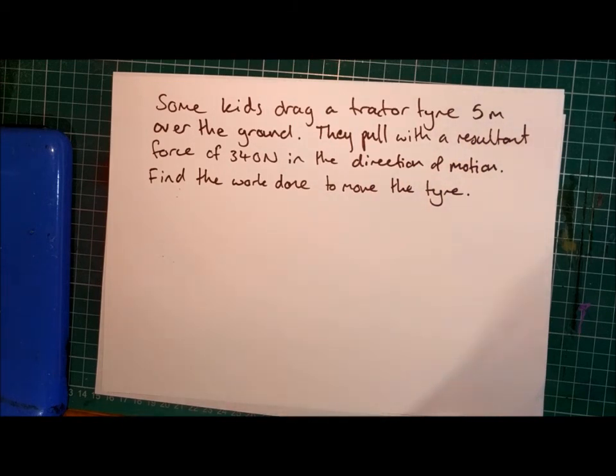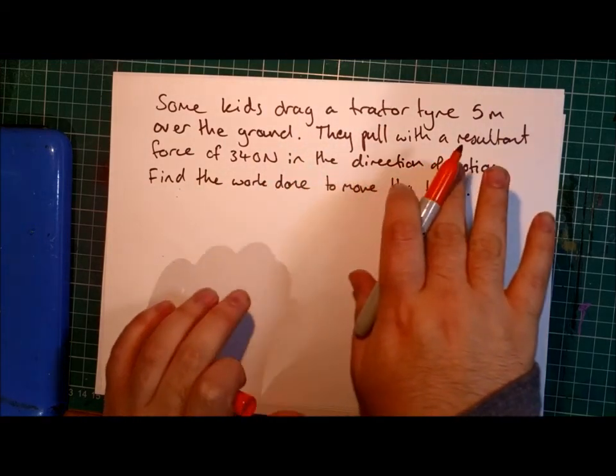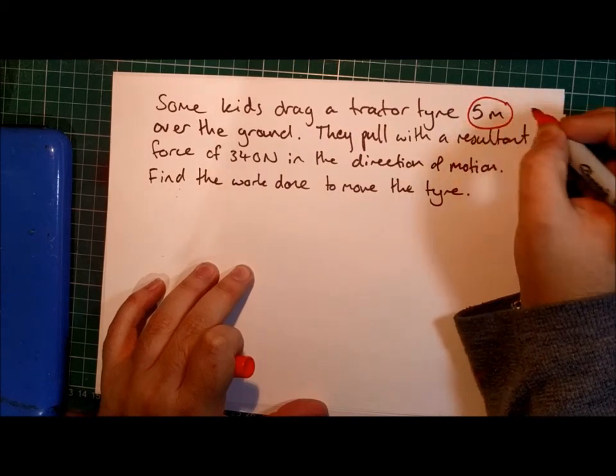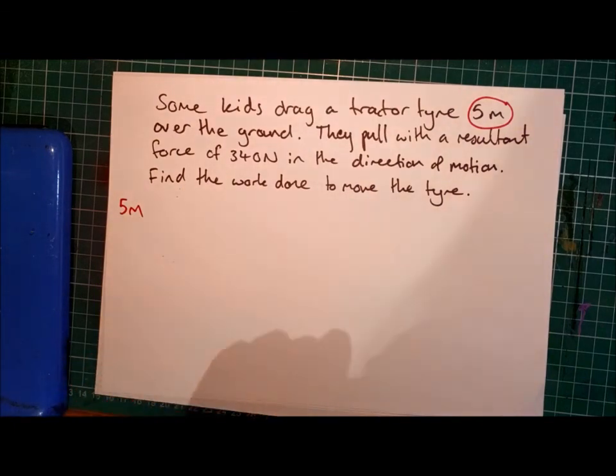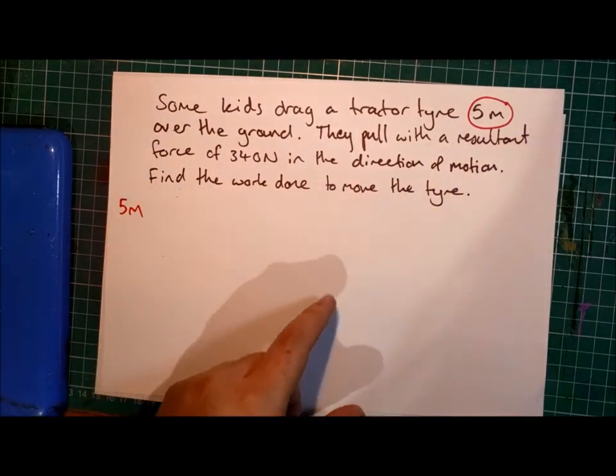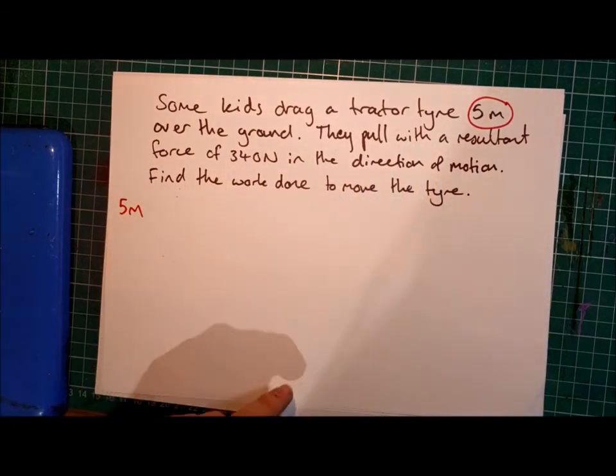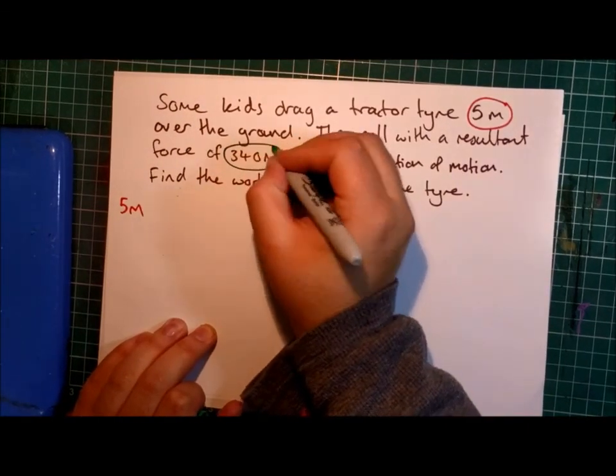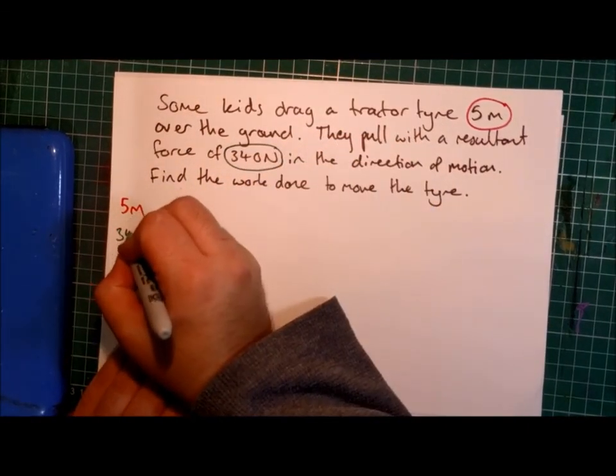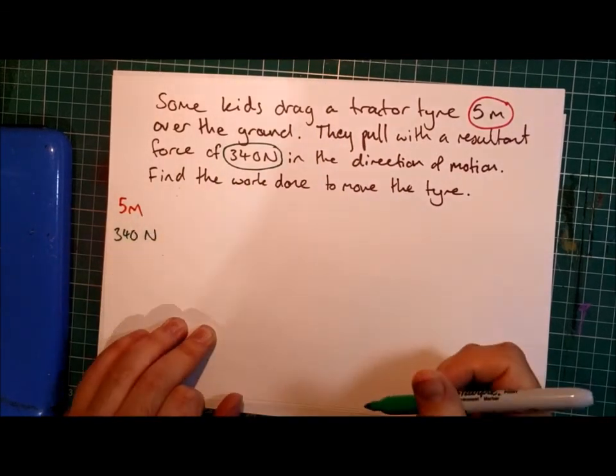So let's highlight the physical quantities mentioned in the question. We have five metres - some kids drag a tractor tyre five metres, so there is our first quantity, we've got five metres. It's a distance over the ground. They pull with a resultant force of 340 newtons. So there's our second physical quantity, 340 newtons.